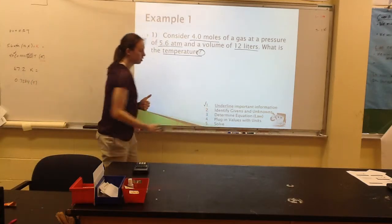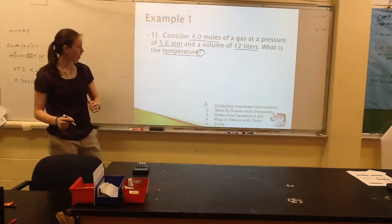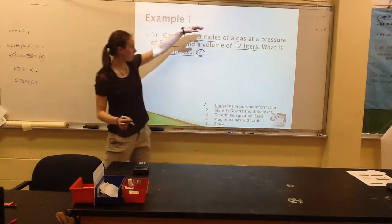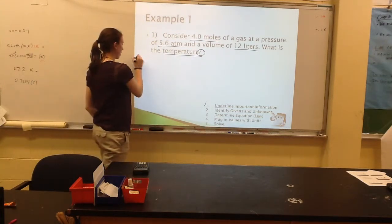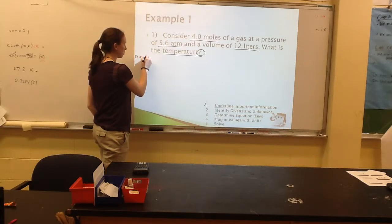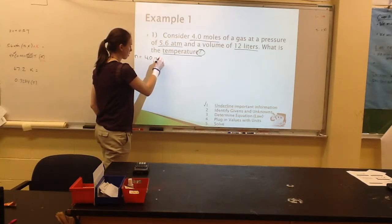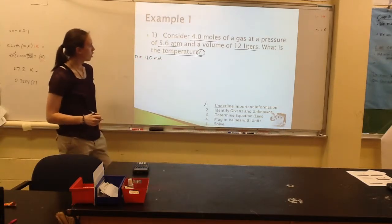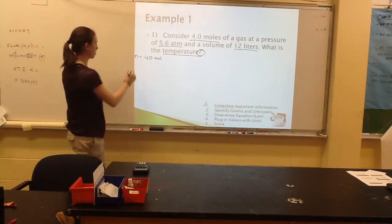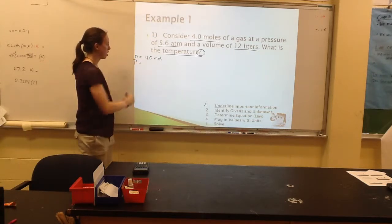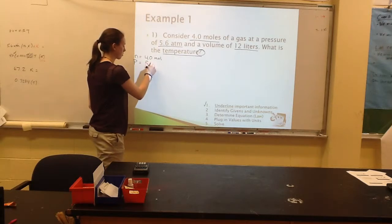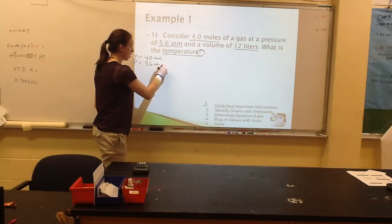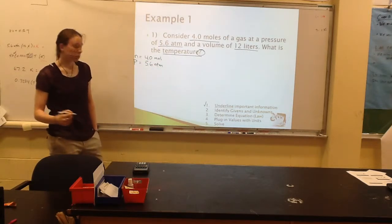Next up is to identify our givens and our unknowns. So consider 4 moles. Our variable that we use for moles is n, so n equals 4.0 moles. We've got a pressure. P is our variable for pressure, and we have 5.6 atm.